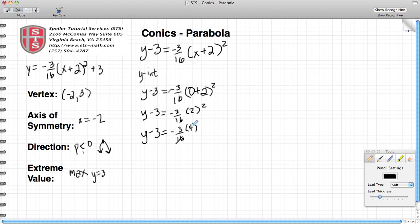And then I notice that the 16 here and the 4 have a common factor of 4. So 4 divided by 4 is 1, and 16 divided by 4 is 4, so that's going to leave me with y minus 3 is equal to negative 3 fourths.